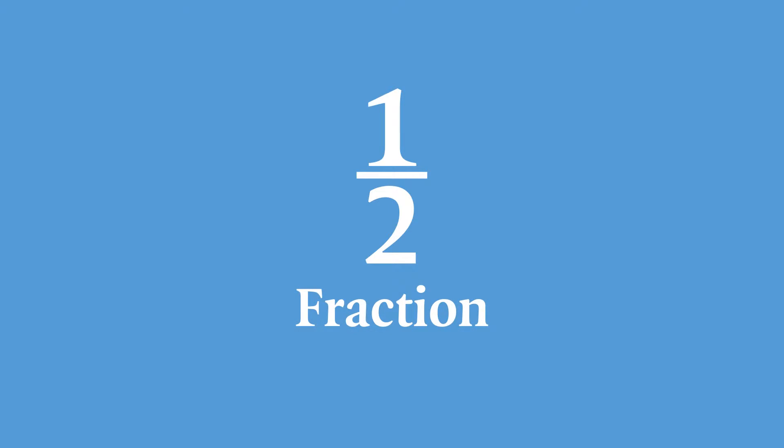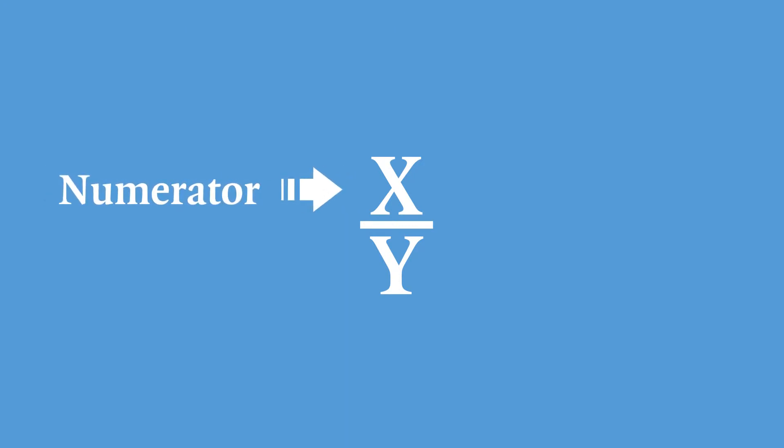Fractions are written with one number on top and one number at the bottom with a line dividing them, like this. Let's say that x and y could be any number. We call the x the numerator and the y the denominator. The only rule with fractions is that the denominator cannot be zero.